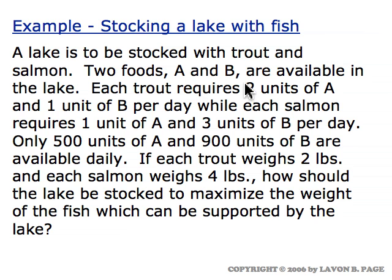There are two foods, A and B, which are found in the lake. We know how much of each type food is required by the trout and how much of each type food is required by the salmon. We know how much food of each type is available daily in the lake. The trout weigh two pounds, the salmon weigh four pounds, and the question is how many of each type fish should be put in the lake.